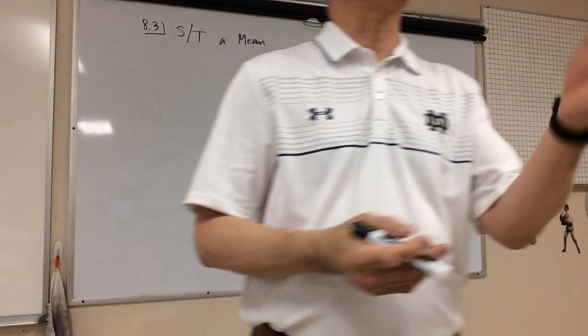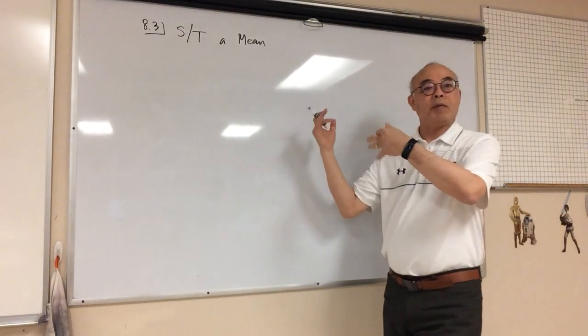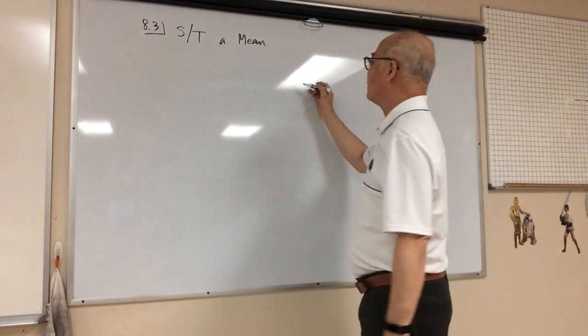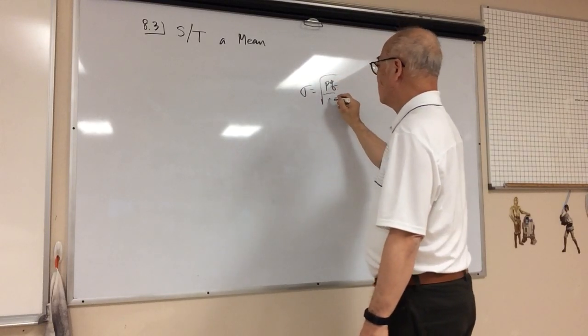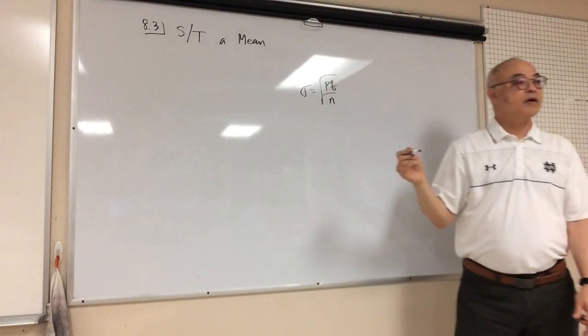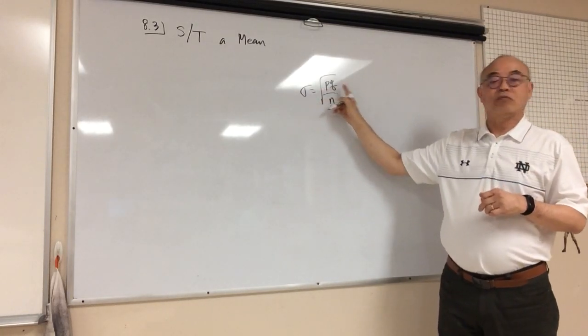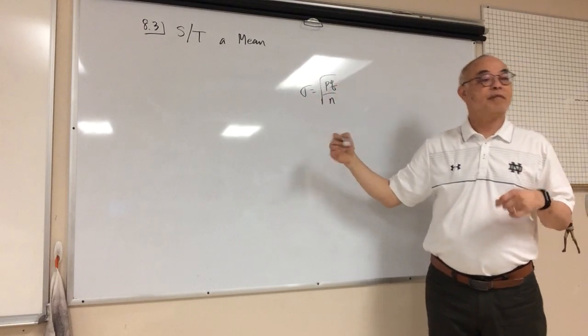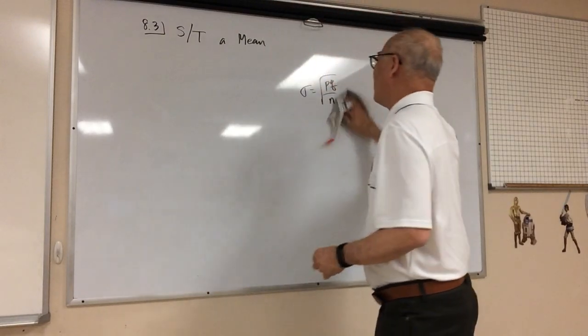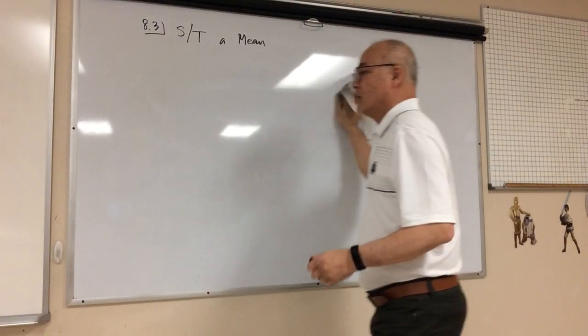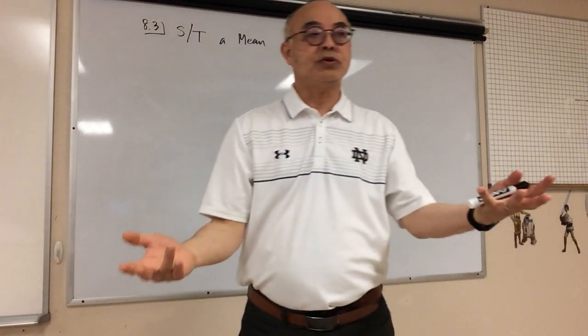Because when we were doing the confidence interval for proportion, we had the handy-dandy equation here, right? So we did not have to know this. As long as we knew this, we were able to find out what it was. Well, for the mean, I don't have this handy-dandy equation. So if I don't know what the sigma is, I can't use a normal distribution.